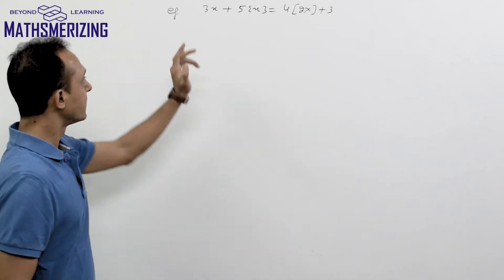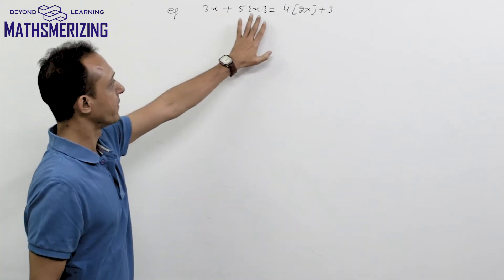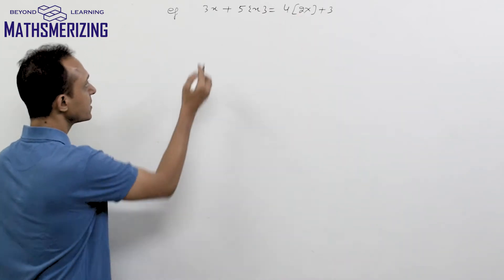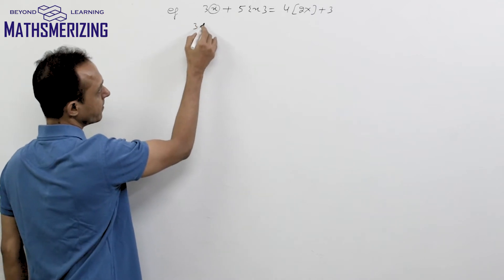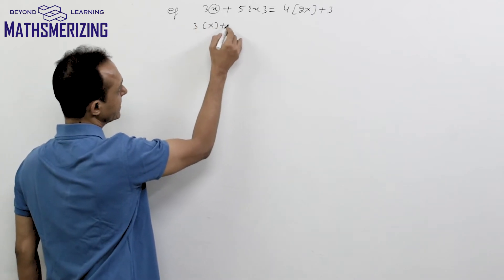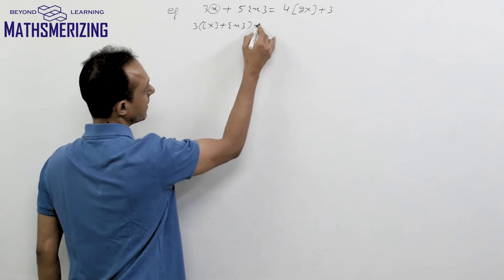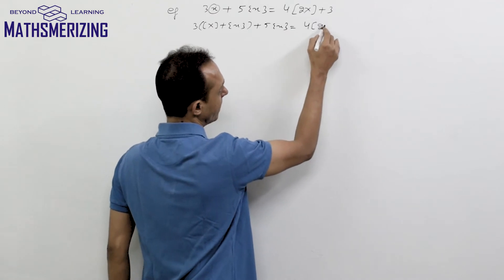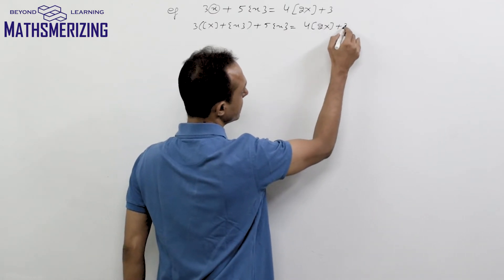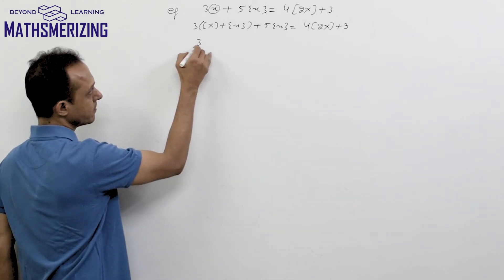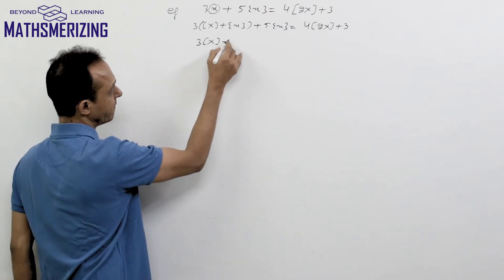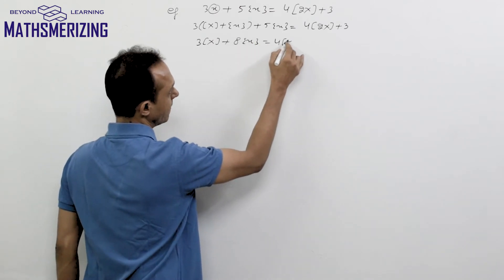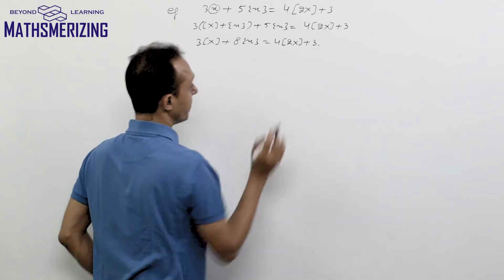So we discussed another problem. The problem is 3x plus the fractional part of x to the power 5, equals 4 times the greatest integer function of 2x plus 3. What I'll do is replace x, writing 3 times the greatest integer function of x plus the fractional part of x, and this is 5 times the fractional part of x equals 4 times 2x plus 3. So I can write it as 3 times the greatest integer function of x, and 3x plus 5x will be 8 times the fractional part of x.